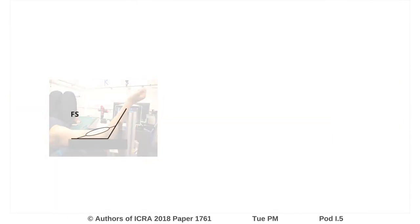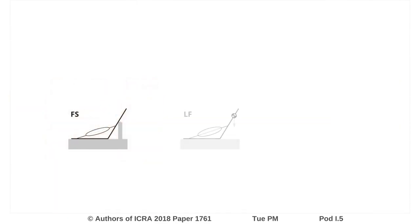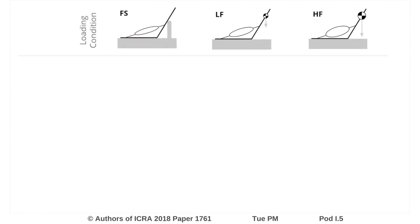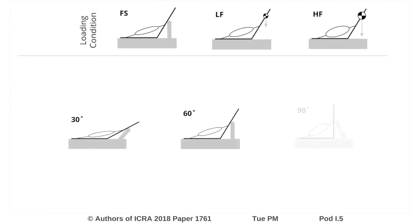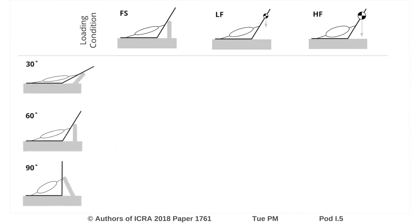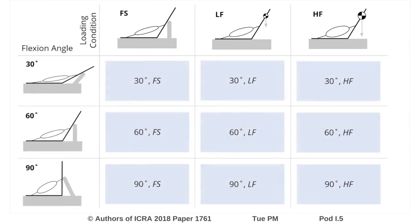To understand and quantify both load-related muscle deformation caused by muscle activation and configuration-related deformation caused by muscles passively stretching and colliding, we collected 9 volumetric scans of a single subject's biceps brachii under varying loads and elbow flexion angles.